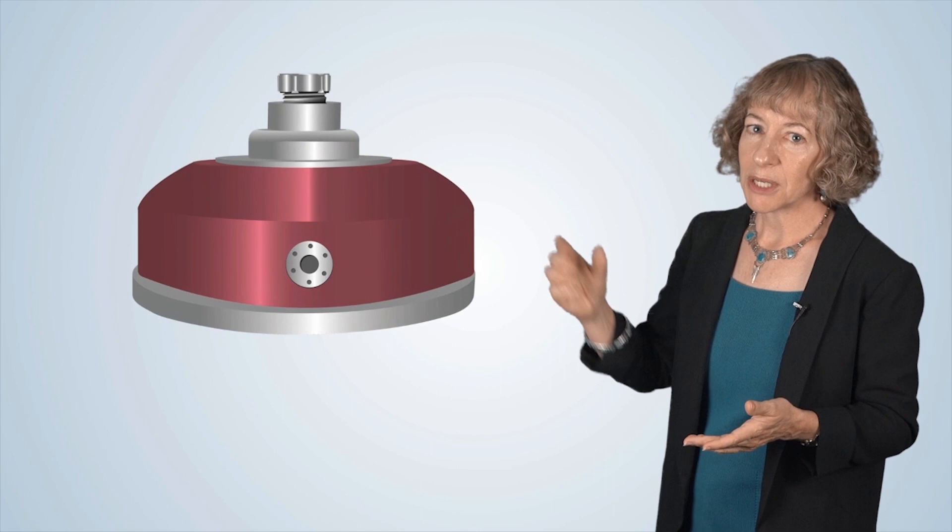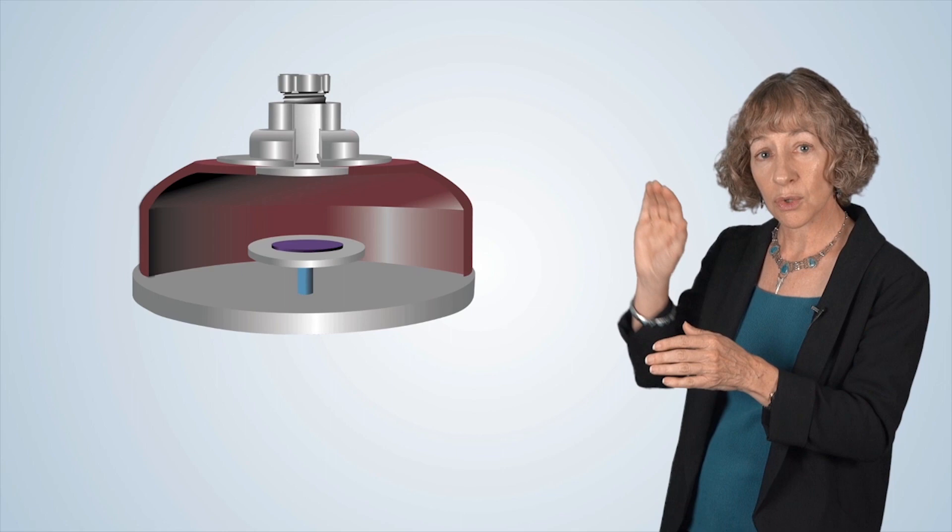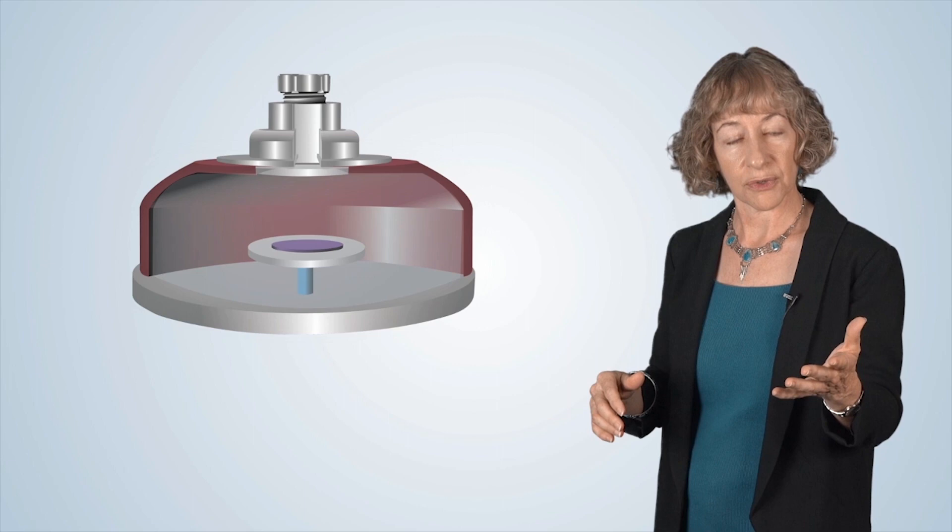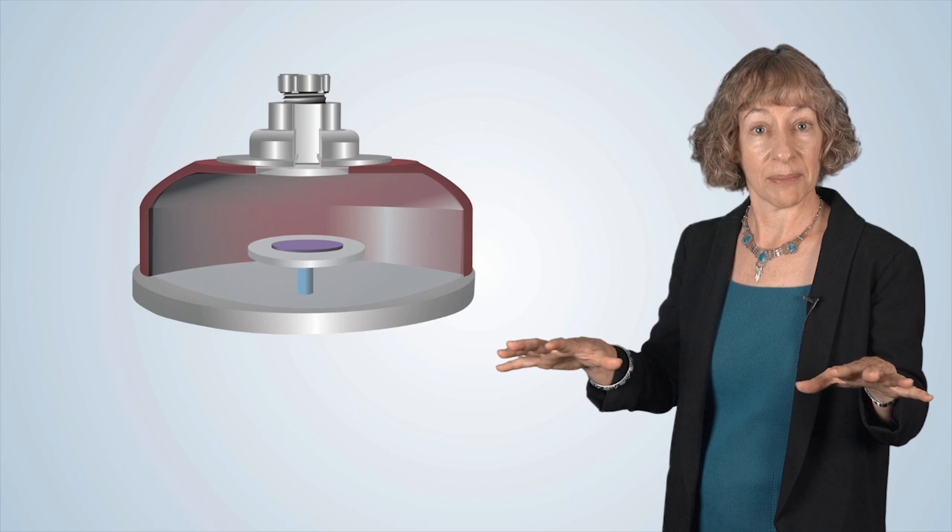So to use PECVD, first we pump the chamber down with a mechanical pump to approximately one millitorr to provide a clean environment for our deposition. Next, the source gas or gases flow into the chamber. Different gases are used to deposit different materials, such as the silicon dioxide and silicon nitride I mentioned earlier. The pressure and gas flow are allowed to stabilize, and the pressure can vary from the millitorr range up to a few torr. This stabilization typically takes less than one minute.